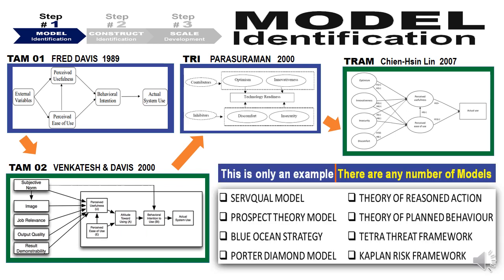What I have listed is just one example — there are any number of models. The SERVQUAL model talks about service quality. Prospect Theory has its theoretical underpinning on risk. Blue Ocean Strategy talks about uncontested competition. Porter's Diamond model talks about the competitive advantage of a nation. Theory of Reasoned Action and Theory of Planned Behavior go together. The Tetra Threat Framework talks about the sustenance of a strategy. And the Kaplan Risk Framework categorizes risk into multiple genres.